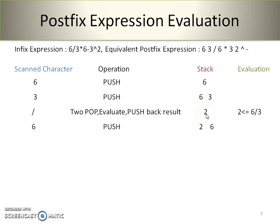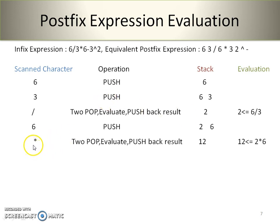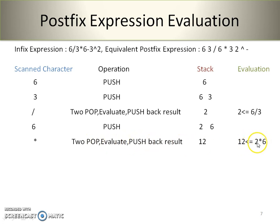The next scanned character is 6 — push it onto the stack. The next scanned character is the multiplication operator. We perform two consecutive pop operations, then evaluate and push the result back onto the stack. 2 multiplied by 6 gives a result of 12, which we push back onto the stack.